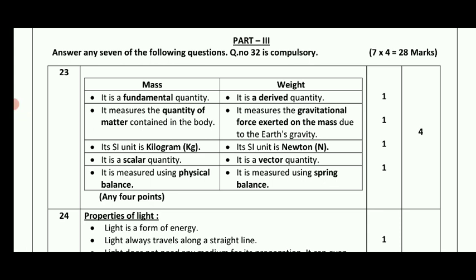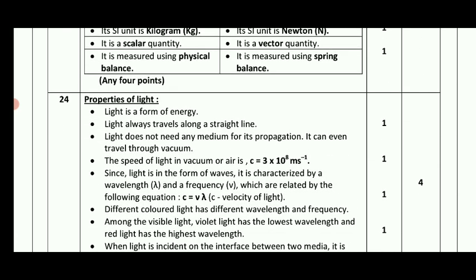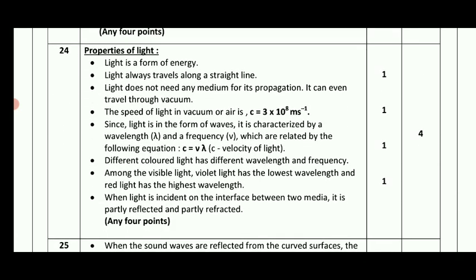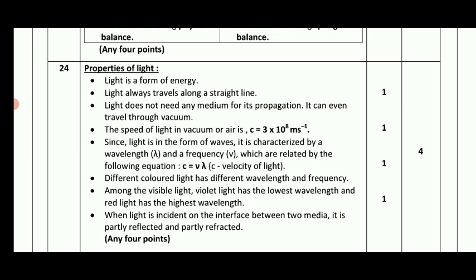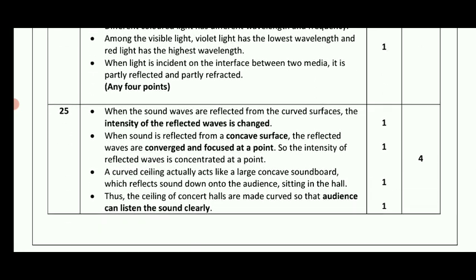The next one is the properties of light. The main point is that light is a form of energy. Light always travels along a straight line.